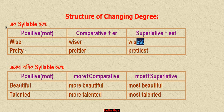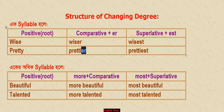Another example: the adjective is 'pretty.' In the comparative degree, pretty becomes 'prettier' — E-R. In the superlative degree, pretty becomes 'prettiest' — E-S-T. So the adjective adds ER for comparative and EST for superlative.